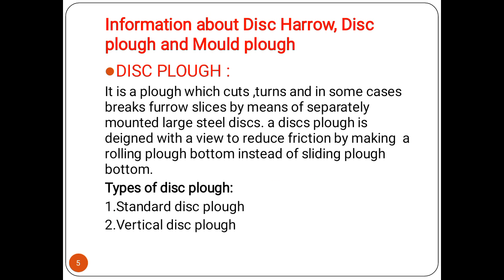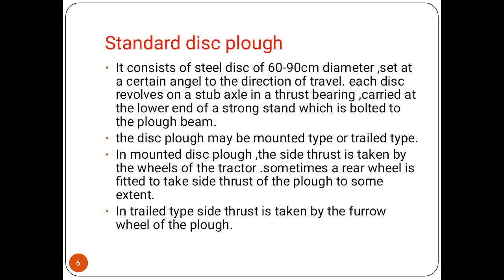The disk plow is a plow which cuts, turns, and in some cases breaks the furrow slices by means of separately mounted large steel disks. The disk plow is designed with the aim to reduce friction by making a rolling plow bottom instead of a sliding plow bottom. The types of disk plow are the standard disk plow and the vertical disk plow.